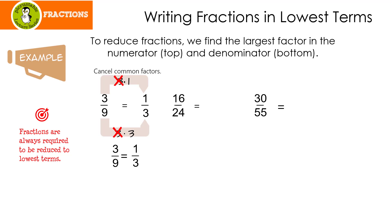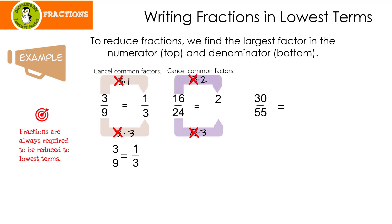Let's look at the next one. When I think of 16, I think of 8 times 2. Does 8 go into 24? It sure does — 8 times 3. I'm going to cancel the common factors, which leaves me with 2 over 3. It turns out that 16 over 24 reduces to 2 thirds.